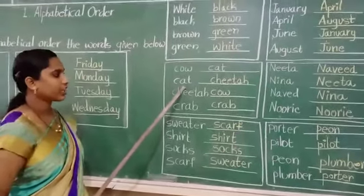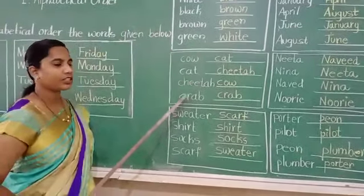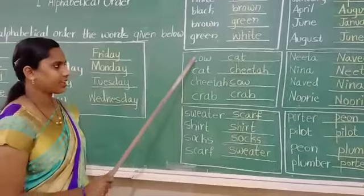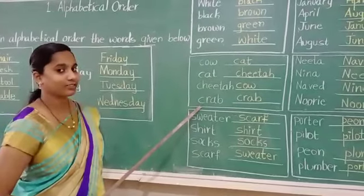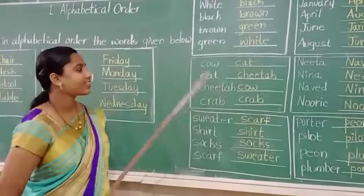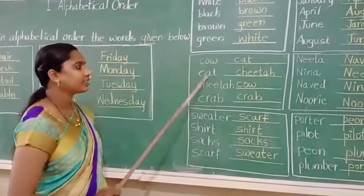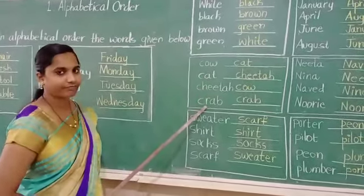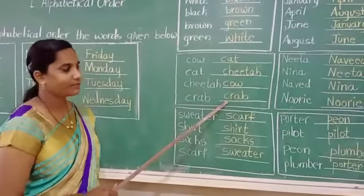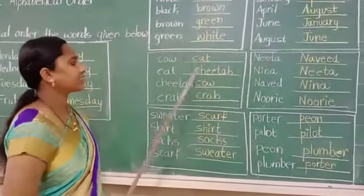Next question: cow, cat, cheetah, crab. Now see children, all the first letters of the words are the same — C, C, C, C. Now you should see the second letter. Second letter: O, A, H and R. What is the answer? First answer will be A — that is cat. Next one is cheetah. Third one, cow. And the last one is crab. Is it clear? Good. So what are these? They are animals.